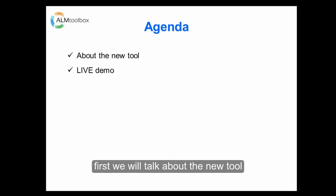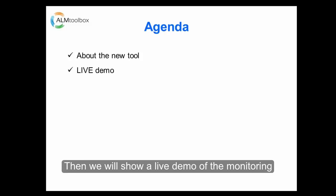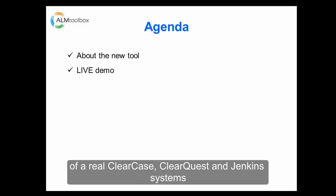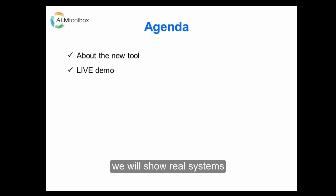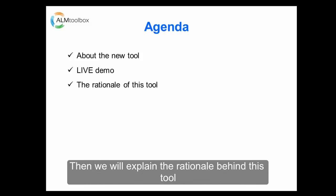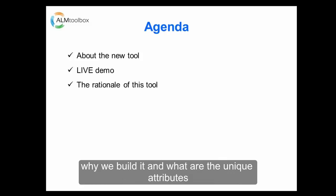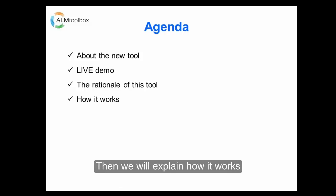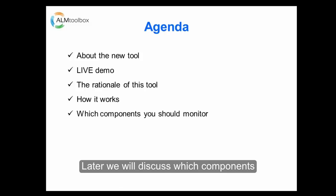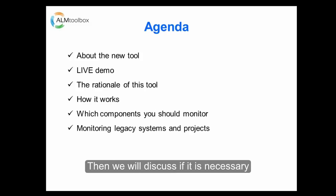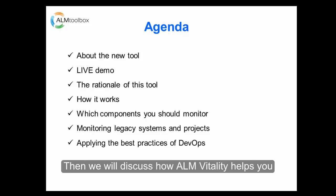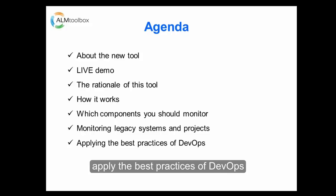First, we will talk about the new tool. Then we will show a live demo of monitoring real ClearQuest and Jenkins systems — we will show real systems. Then we will explain the rationale behind this tool, why we built it and what are the unique attributes, and how it works. Later we will discuss which components you should monitor on ClearCase, ClearQuest and Jenkins, and whether it's necessary to monitor legacy systems or projects. Then we will discuss how ALM Vitality helps you apply the best practices of DevOps.